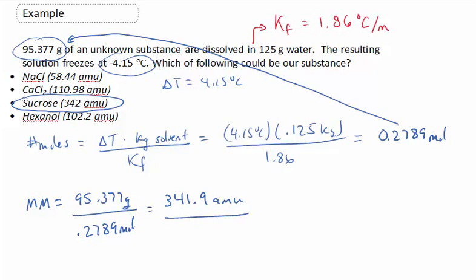Other tests would need to be done because there are other substances with approximately 342 amu's as its molecular mass. So we'd have to do some more experiments, but this is a start. So there you go. Just another type of problem we can do with the colligative properties.